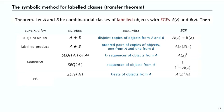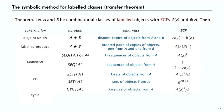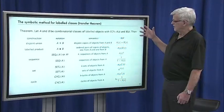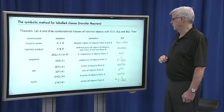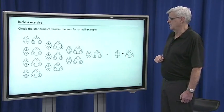For set, it's A(z) to the K over K factorial, or for a set of any size, it's e to the A(z). And for cycle: if it's a K-cycle, it's A(z) to the K over K. And a cycle of any length is log of one over one minus A(z). These are very natural and we'll show the proofs in a minute.